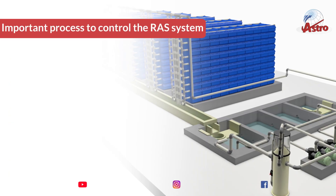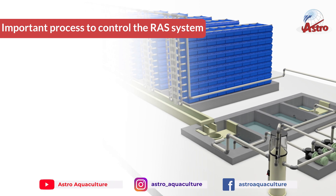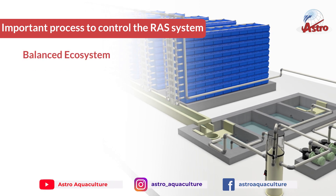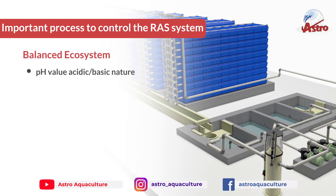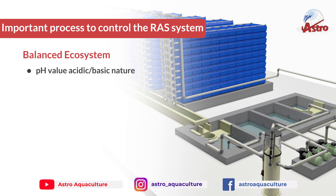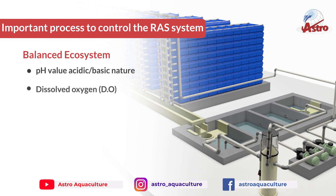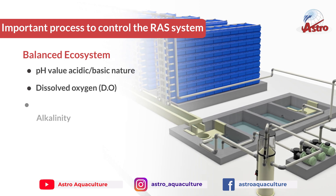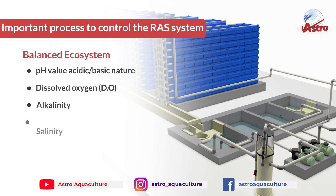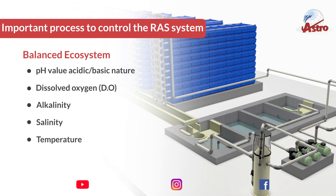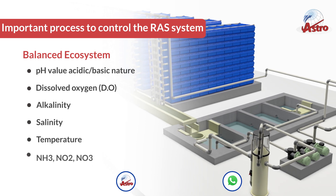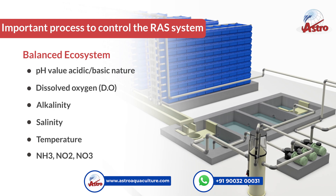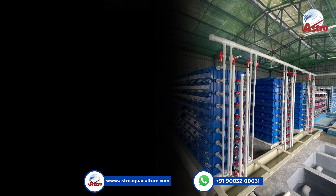Important processes to control the RAS system for a balanced ecosystem: pH value (acidic/basic nature), dissolved oxygen (DO), alkalinity, salinity, temperature, NH3, NO2, and NO3.